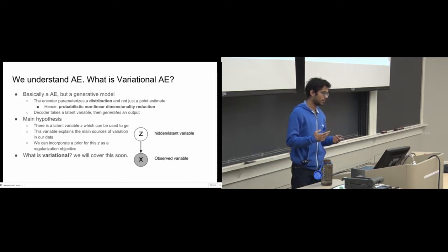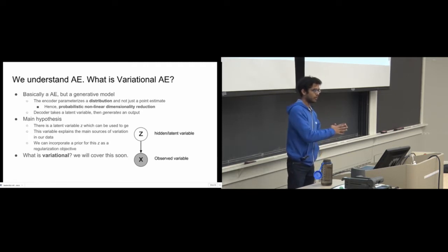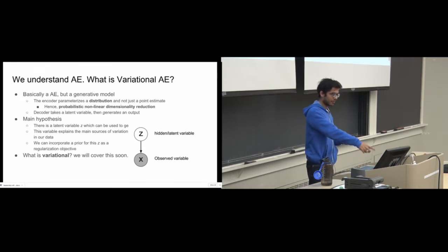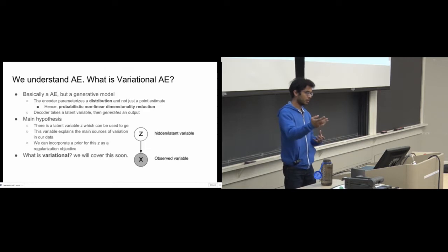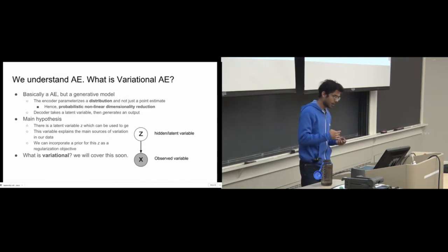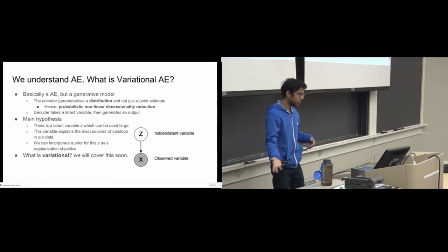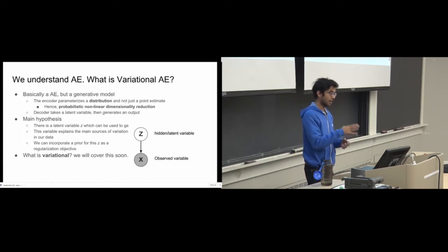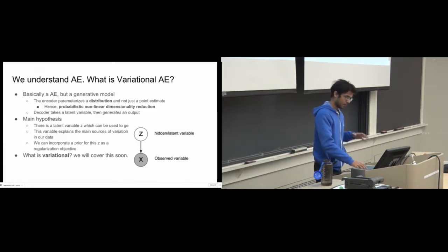The key difference is that the VAE is a generative model. You're assuming you have a latent variable that can be used to generate most of your data. In the probabilistic graphical model, you have a hidden variable Z producing an observed variable X — the arrow goes from Z to X. The latent variable Z explains the main sources of variation, and we want to incorporate a prior for Z as a regularization objective. We'll cover what 'variational' means soon.